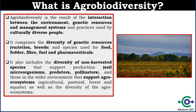Let's understand what agrobiodiversity is. It is the result of the interaction between environment, genetic resources, and management systems, and it also includes practices used by culturally diverse people. It comprises the diversity of genetic resources such as varieties of different crops and breeds of different animals. It also includes foods, fodder, fiber, fuel, and pharmaceuticals. It further includes diversity of non-harvested species such as soil microorganisms, pollinators, and predators — whatever supports agricultural production. In a wider sense, it also comprises forest and aquatic systems.